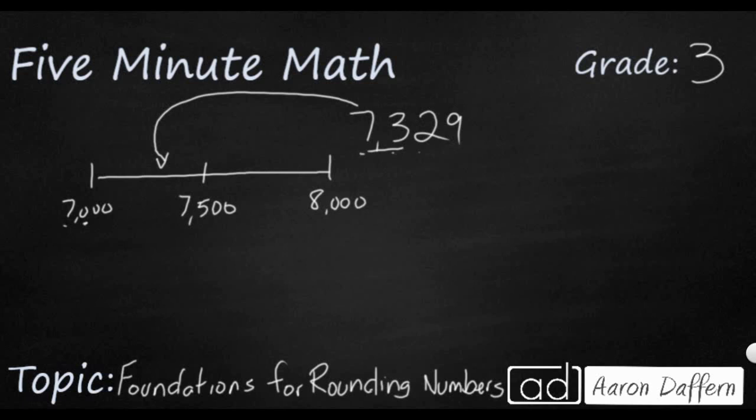But what if I were to take this exact same number and I were to round it to the 100s place? So I'm going to take a look at it this way. The two benchmark numbers are going to be 7,300 because I have a 7,000 and a 300. I'm going to make these two zeros. And then 100 more would be 7,400. So I need my midpoint here.